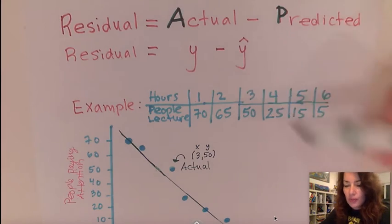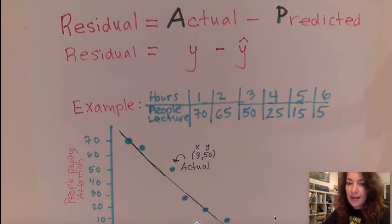When we're talking about residual, we are talking about a vertical distance. So we are talking about the Y value of an ordered pair.